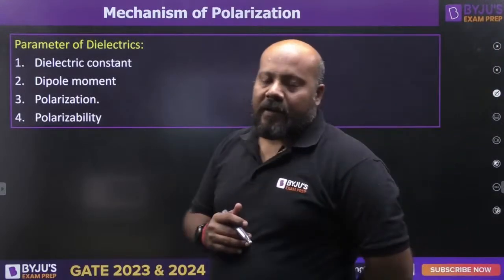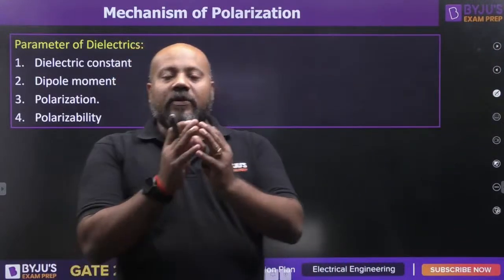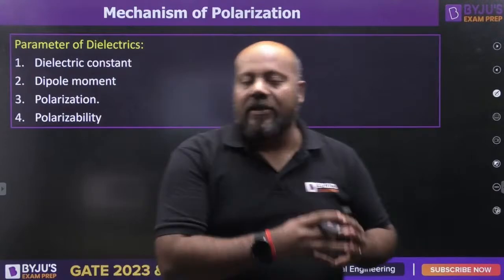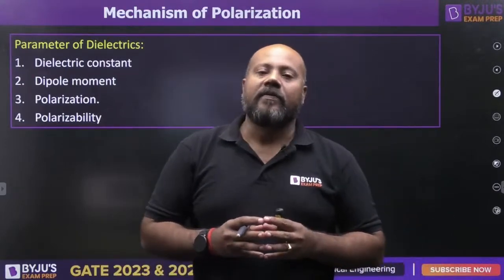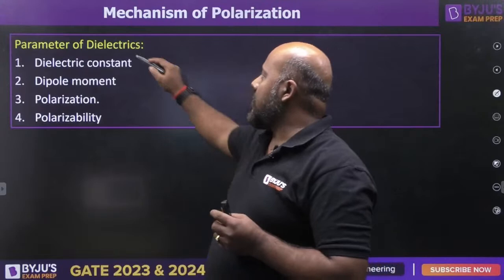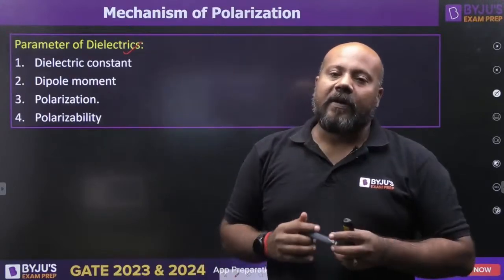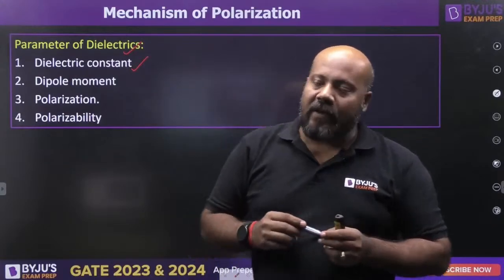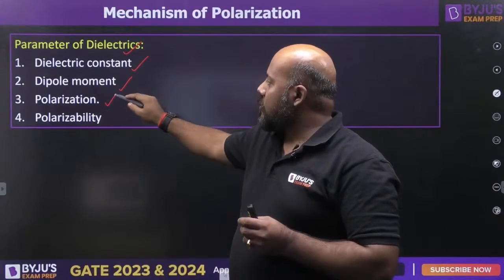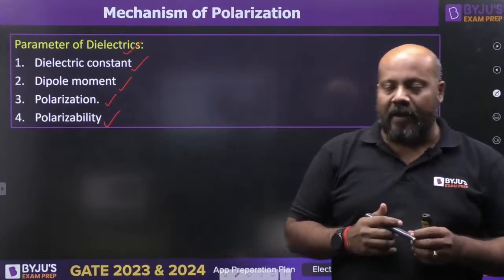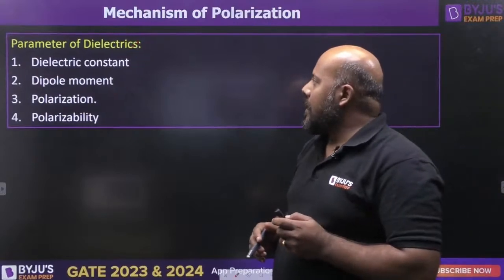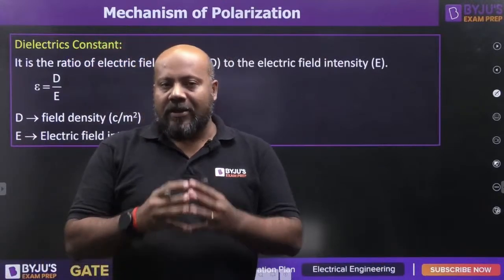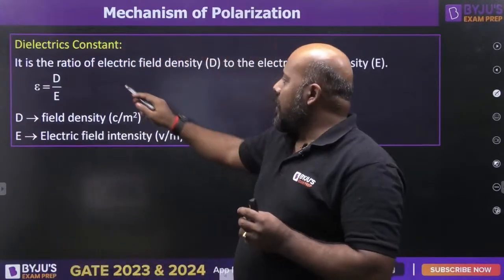Now let us talk about the parameters of dielectrics. There are four basic parameters: the first is the dielectric constant, the second is dipole moment, the third is polarization, and the fourth is polarizability. The dielectric constant is defined as the ratio of electric field density D to electric field intensity E.